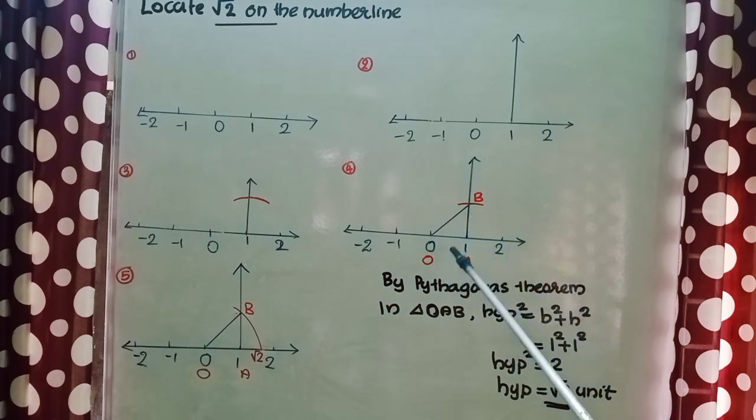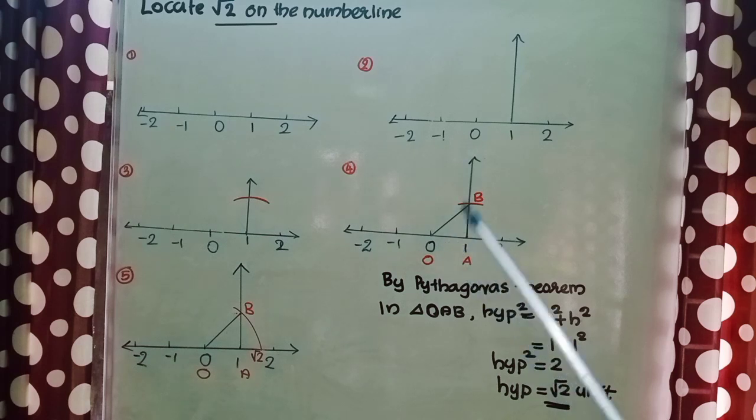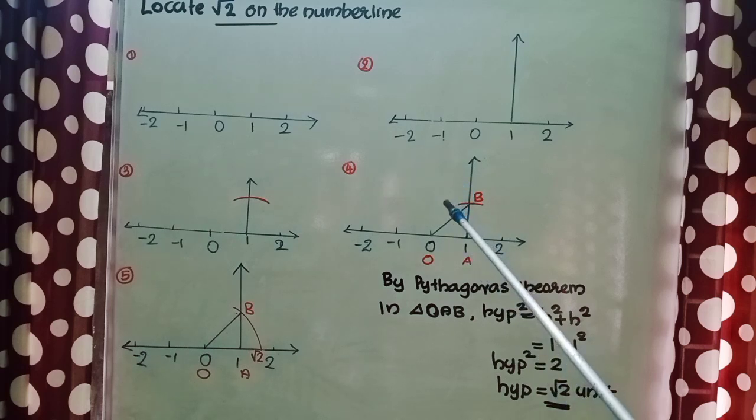Here OA is the base, AB is the height and OB is the hypotenuse. We know the length of OA is 1 unit, length of AB is also 1 unit. The length of OB we don't know. We can find out the length of OB by using Pythagoras theorem.